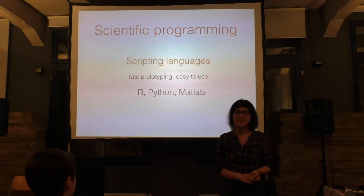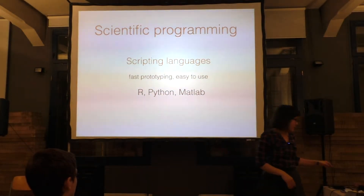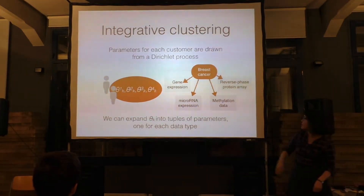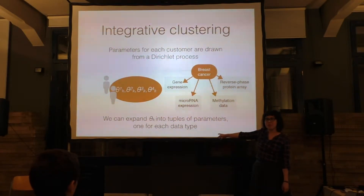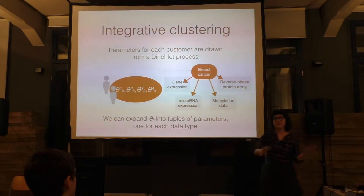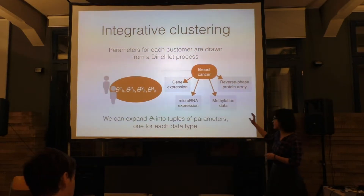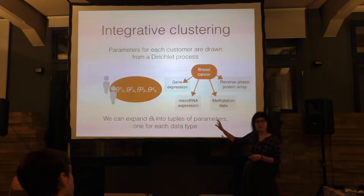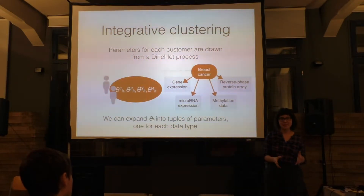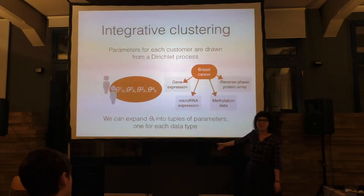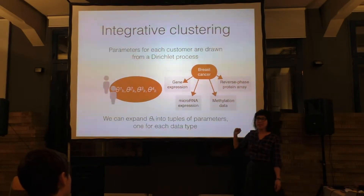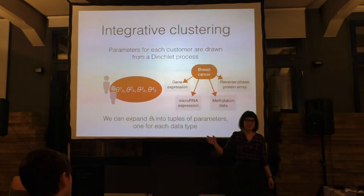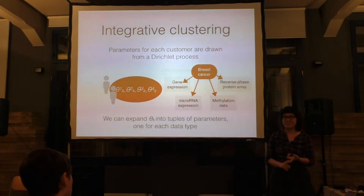Question: What models do you use for the data? In this case, I have Gaussians for all four data types — they are normalized and fit quite well with the Gaussian. But right now I'm working with another dataset on breast cancer that has copy number variation data, which is discretized, so I have a multinomial there as well. I can add any distribution — I did some experiments with time series data using a Gaussian process. This model doesn't restrict your data distribution in any way.